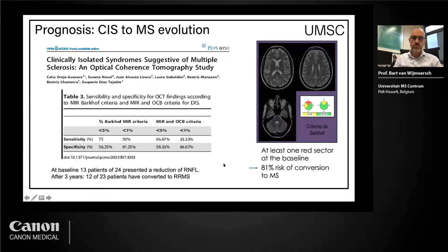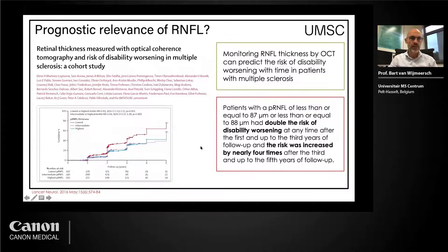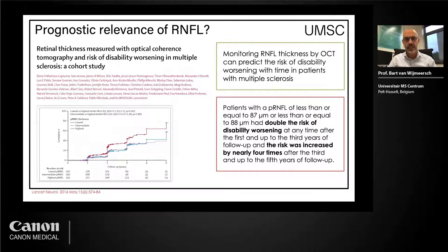Compared to classical MRI criteria or oligoclonal bands on liquor criteria, you see a specificity of about 50 to 60% and also quite good sensitivity. It's always about putting all the dots together, but this can help you with that. Also very important is the prognostic relevance of retinal nerve fiber layer thinning at baseline.